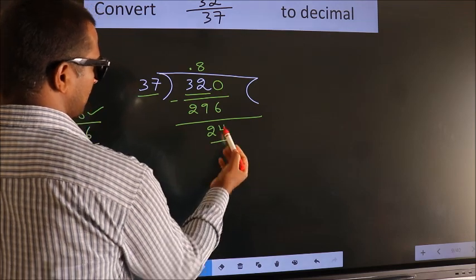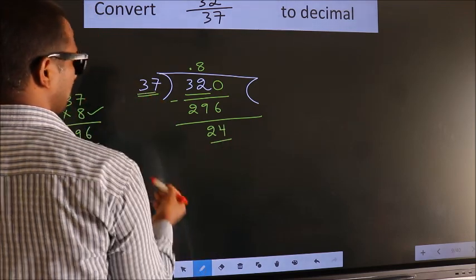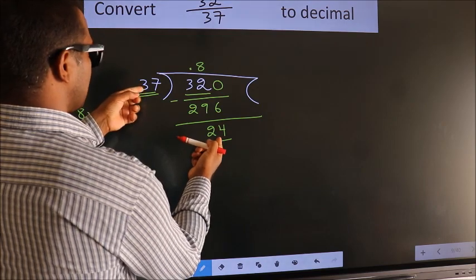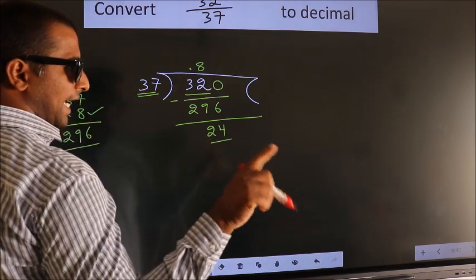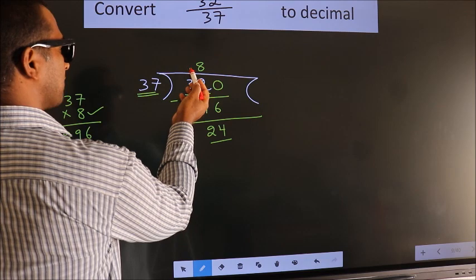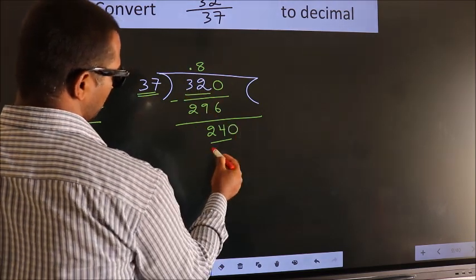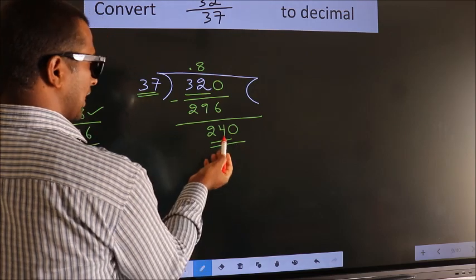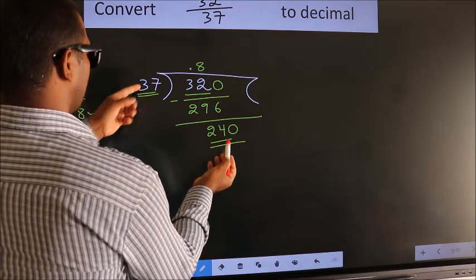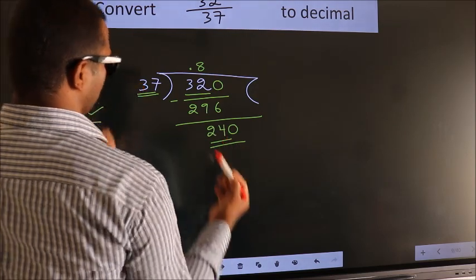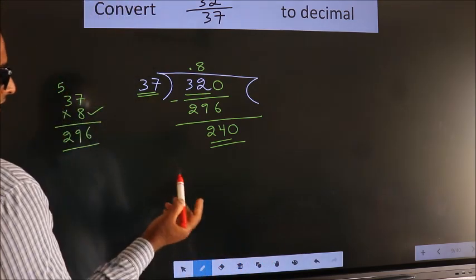Here we have 24, here 37. 24 is smaller than 37, and we already have the decimal, so we can directly take 0. So 240. A number close to 240.